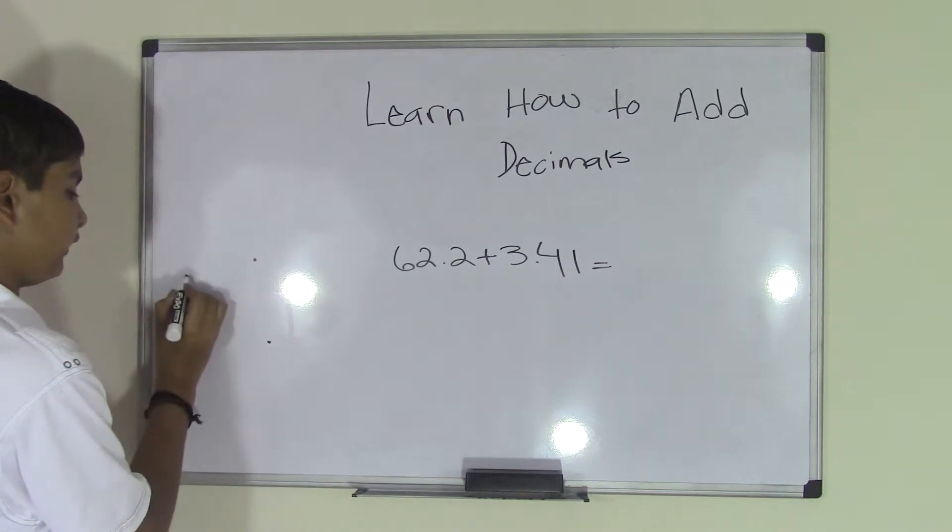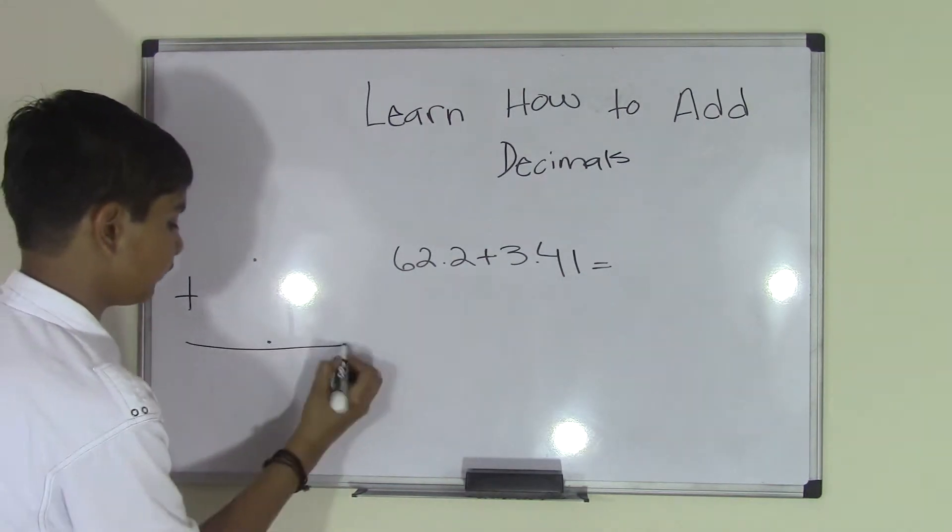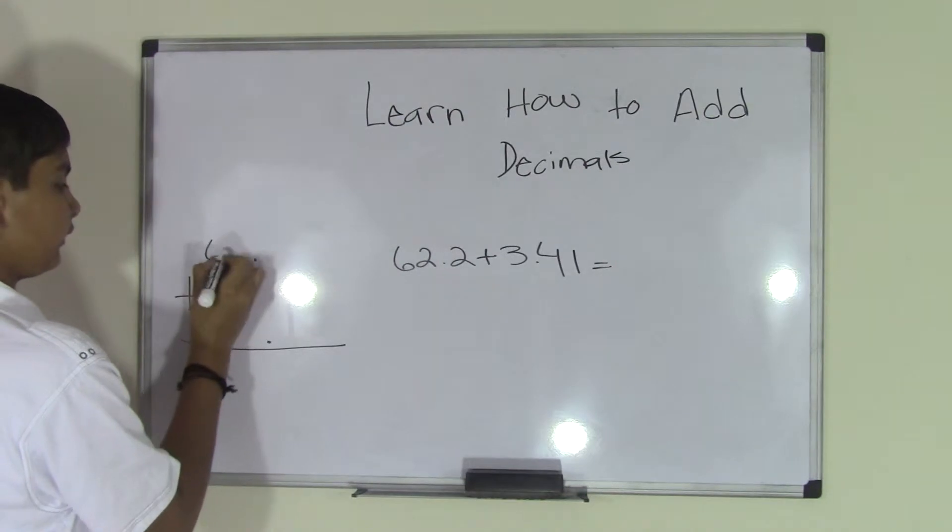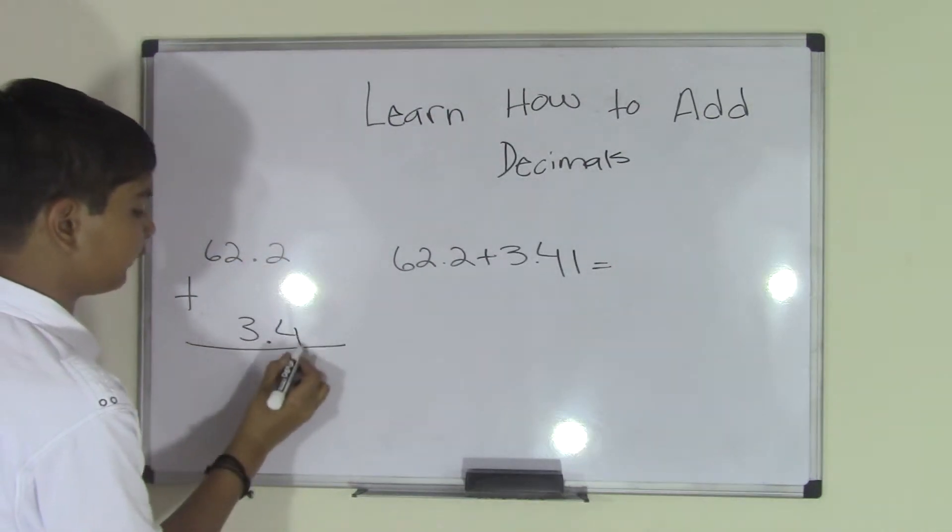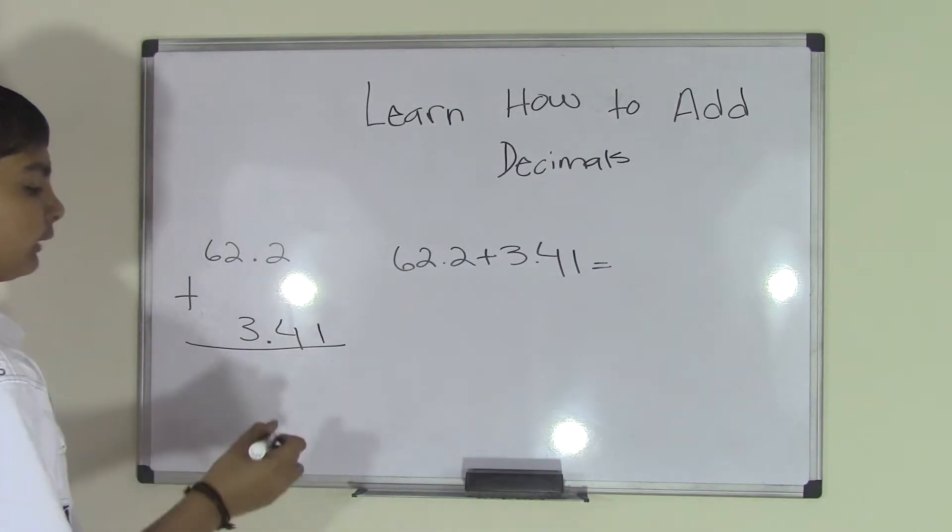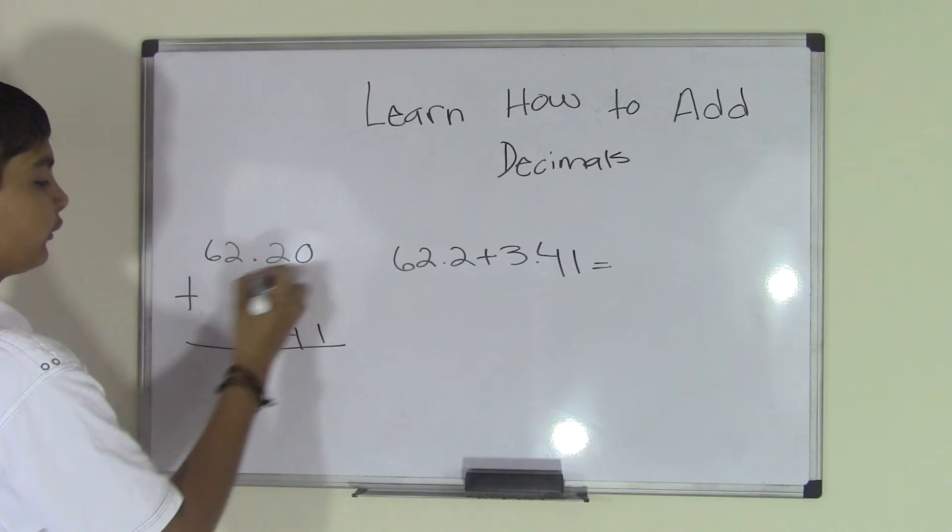Let's add the addition sign, and now let's add the numbers into it. 62.2, 3.41. To make this easier, I guess you could add the zeros where there's no numbers.